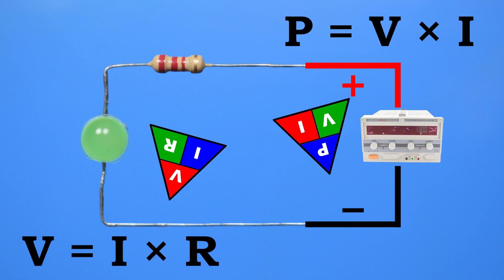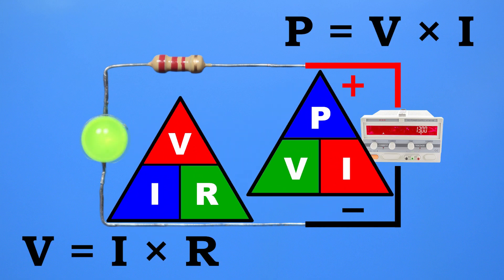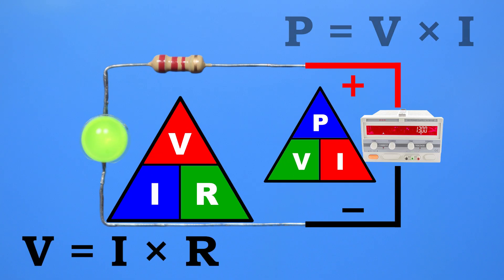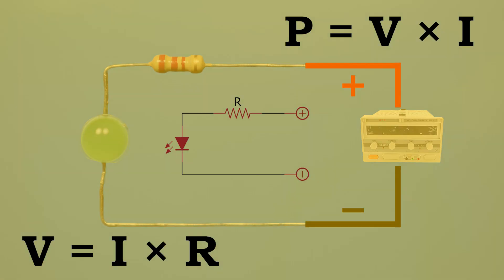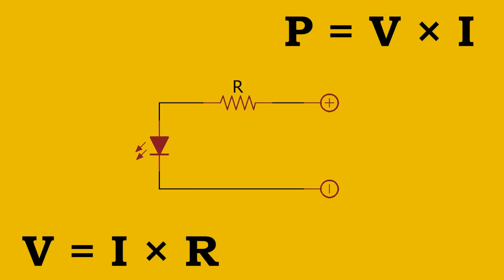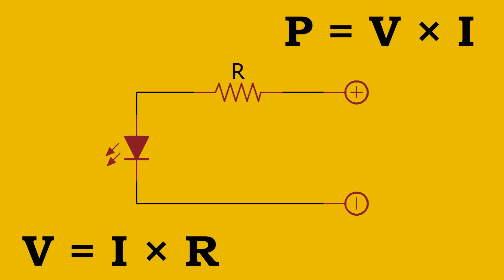Hi everyone! Today we're going to do a simple experiment to understand how Ohm's law and the power law actually work in real circuits. We'll see what happens when we connect an LED to a power supply, how its voltage and current are controlled, and why we need a resistor to keep the LED from burning out.